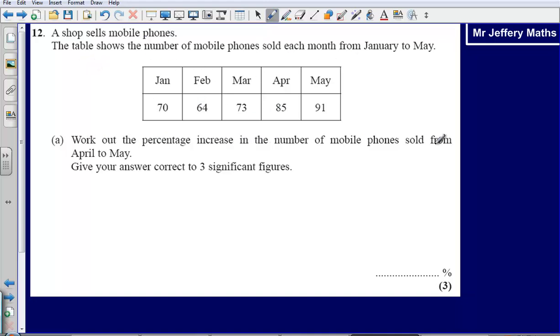Work out the percentage increase in the number of mobile phones sold from April to May. We can see that in April we sold 85, in May we sold 91. So we've increased by 6 mobile phones.